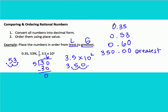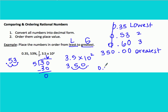The next three numbers all have a zero in the ones place, so that column won't help us compare. Looking at the tenths place, 0.35 has the smallest tenths digit, so that's our lowest. Comparing the remaining two, 5 is smaller than 6, so 0.53 is second and 0.6 is third. The numbers were actually already given in least to greatest order: 0.35, 0.53, 0.6, and 350.